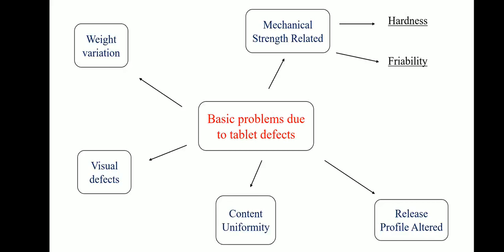The third problem is release profile alteration, which indicates the drug release profile. Drug release refers to the process in which drug solutes migrate from the initial position in the polymeric system to the polymer's outer surface and then to the release medium. The fourth problem is content uniformity. The test for content uniformity is performed to ensure that every coated or uncoated tablet contains the stated amount of medicament within prescribed limits, using tablets randomly selected from a batch.